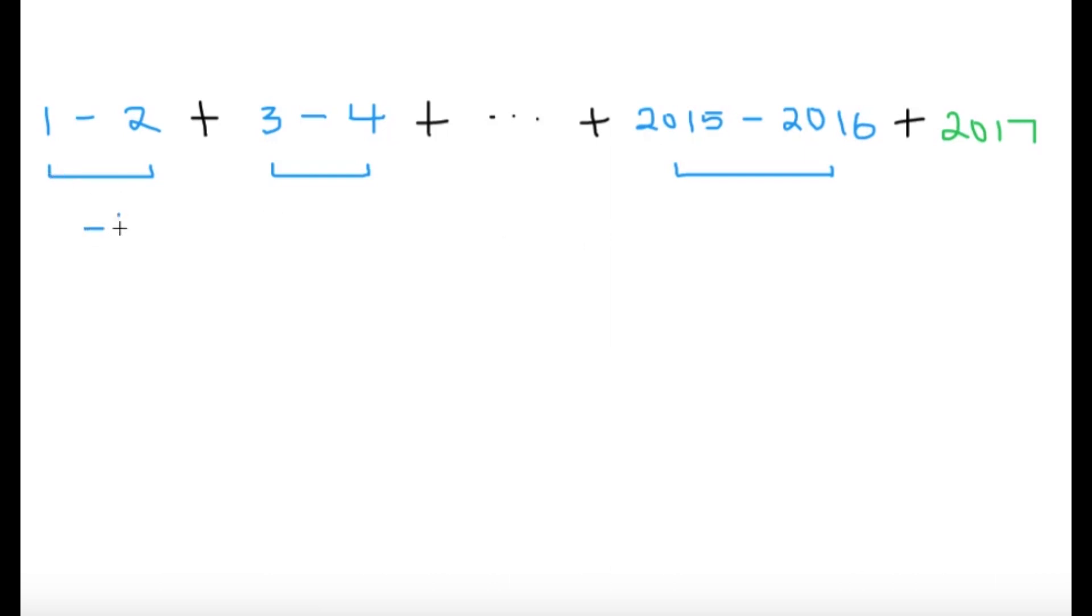So one minus two, that's going to become negative one. Three minus four, that's negative one. 2015 minus 2016, that's negative one. So it's just simply going to be like something minus the next number. So it makes sense to be negative ones. And it's kind of nice because all of them are negative ones.